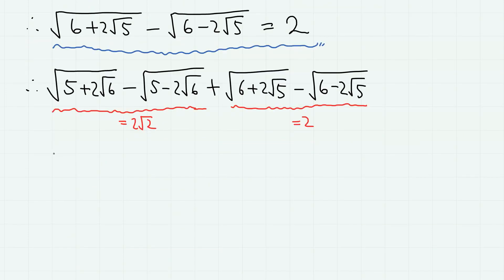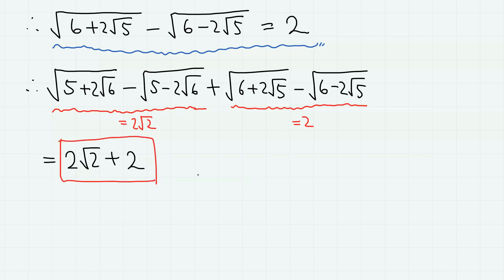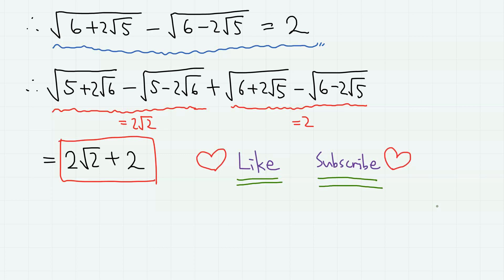Therefore, for the entire expression, we simply have 2√2 + 2, which is of course the same answer obtained by the first method. That's all for today's video. Please check my other nested radical videos — the link is in the description or at the top right corner. Please hit like and subscribe to my channel for various interesting math problems.